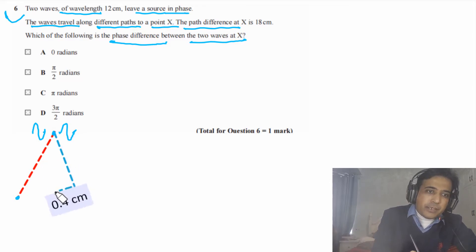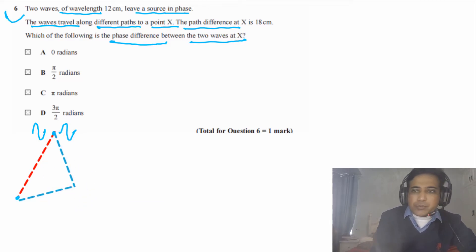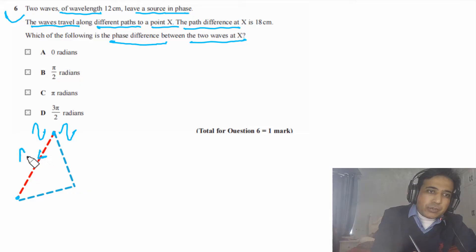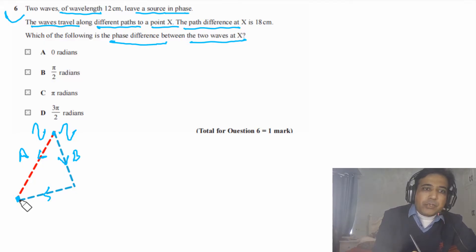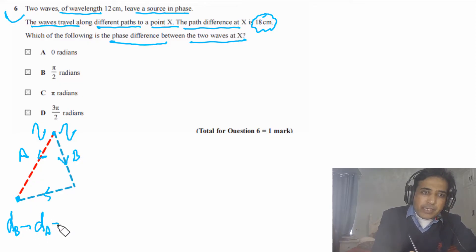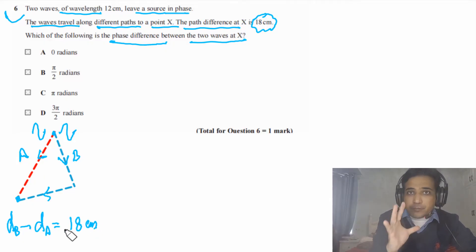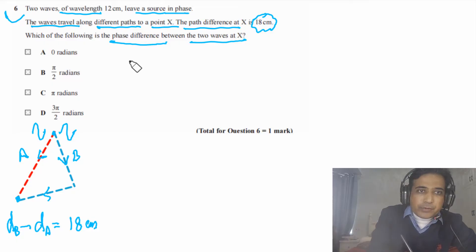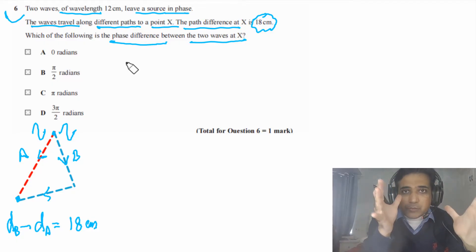We can imagine these two waves reaching point X — one wave travels along one path (wave A) and the other takes a different path (wave B), and they both reach point X. The path difference: distance traveled by B minus distance traveled by A equals 18 centimeters. This is the path difference. We now need to find the phase difference.